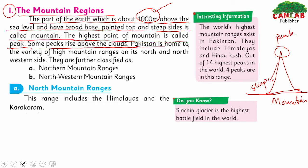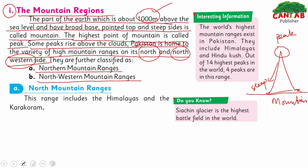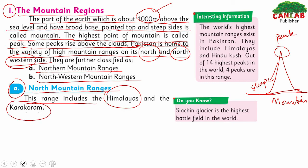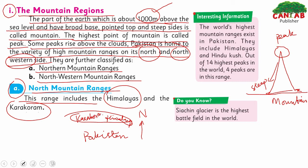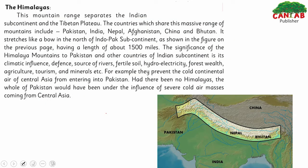Some peaks rise above the clouds. Pakistan is home to a variety of high mountain ranges on its north and north-western sides. They are classified into Northern Mountain Ranges and North-Western Mountain Ranges. The Northern Mountain Ranges include the Himalayas and the Karakoram ranges, which lie to the north of Pakistan.